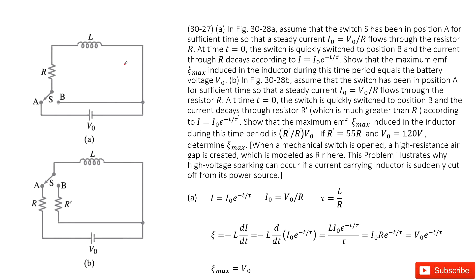We have this circuit, and in part A, we suddenly switch the position from A to B. Once we change the switch to B, the battery is removed. In this loop there are only a resistor and an inductor. That means the current will flow out from the inductor, continue through the inductor, go through the resistor, and the resistor will make the current decay. How the current decays is given by the equation in this chapter.